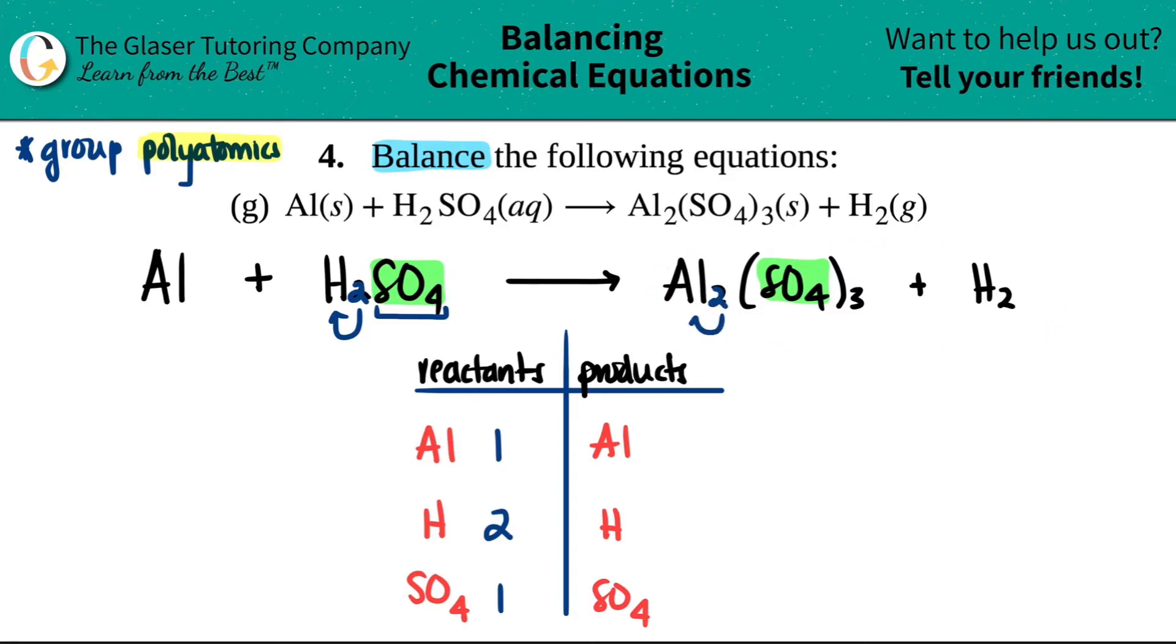And now let's do the same thing for the other side. I have Al₂, so I have two aluminums. Let's skip down to the hydrogens. I have two H's. And now how many sulfates do I have? This whole thing now is branched and it's telling me that I have three of them. There's a three here. So I have three of these.